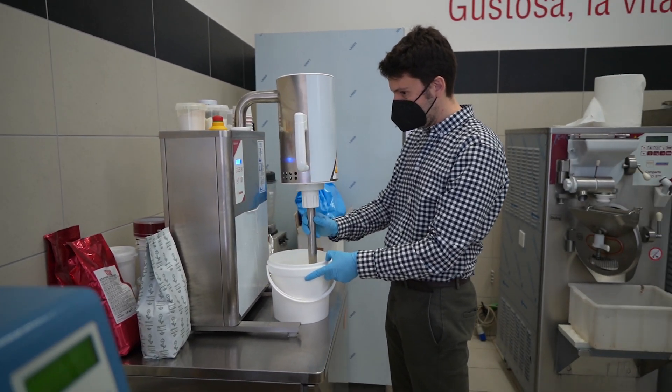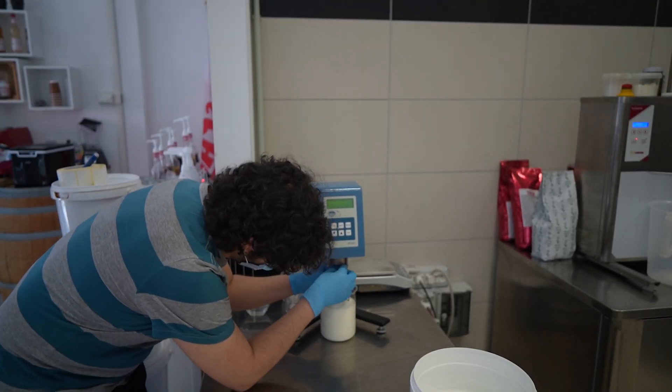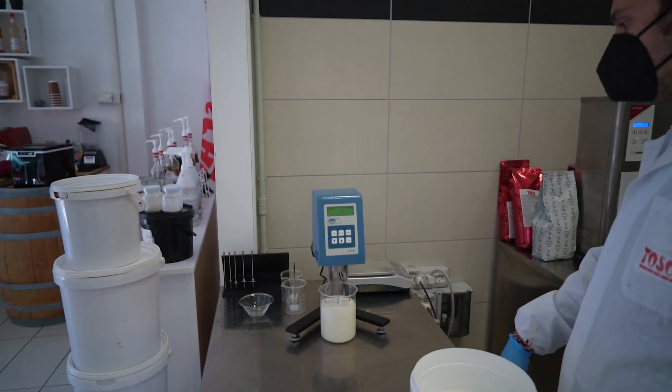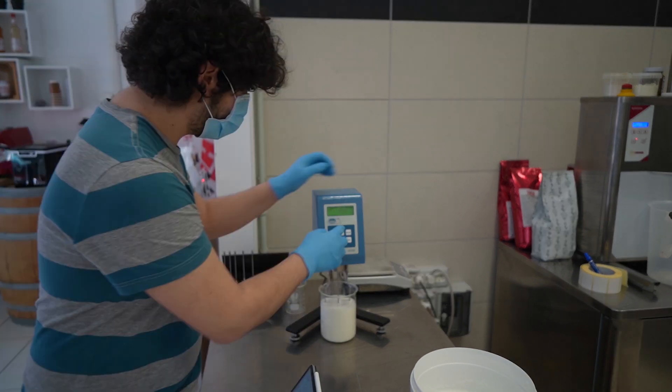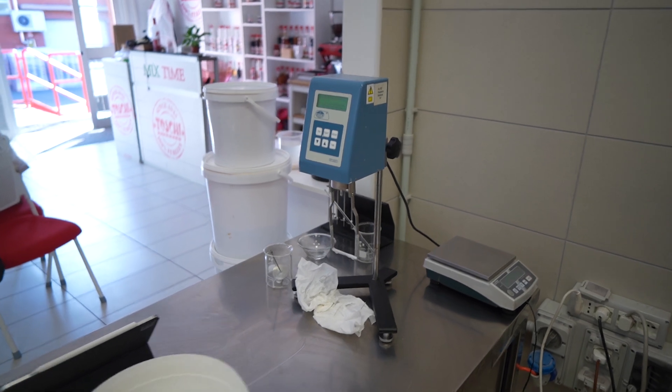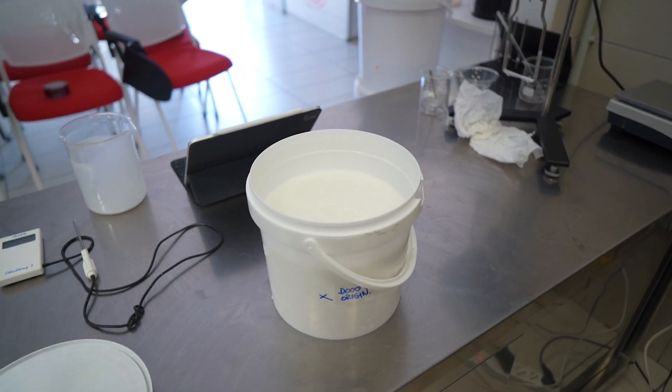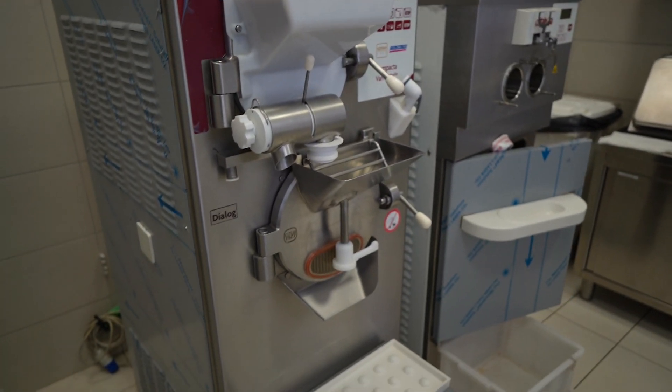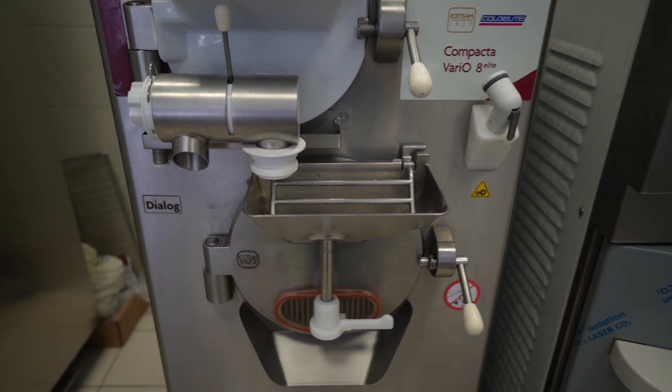We are now mixing the seven mixes that we want to freeze today. They went through the blast chiller and then into the fridge for about 16 hours. Now we mix them, bring them to the same temperature, measure the viscosity, and then put them in a batch freezer. Then we'll measure the overrun and taste it.